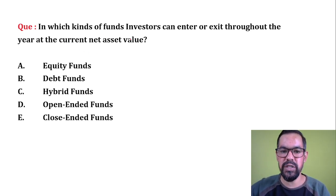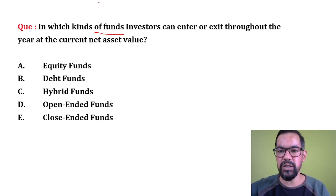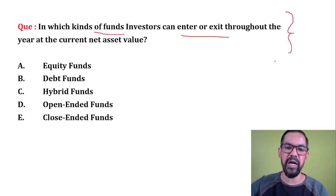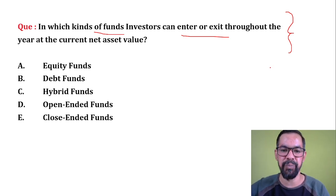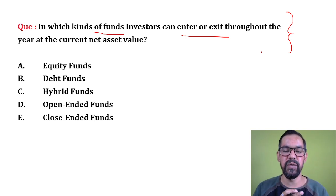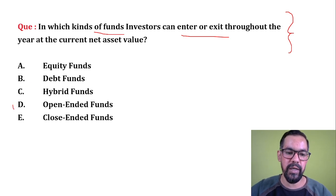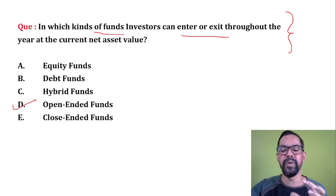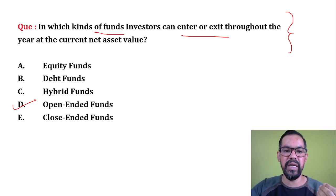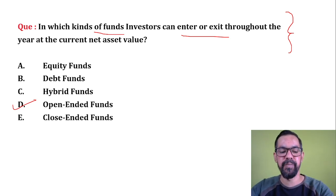The first question on your screen: in which kind of funds can an investor enter or exit throughout the year at the market NAV — Net Asset Value — which is the current market price for any mutual fund? This is based on open-ended mutual funds.